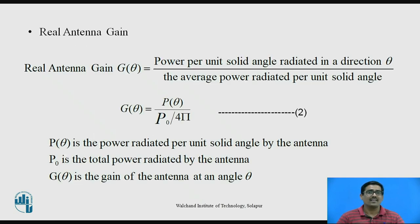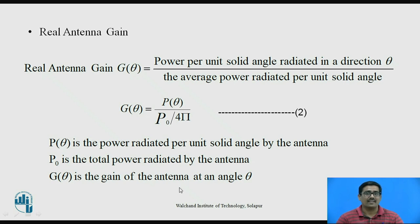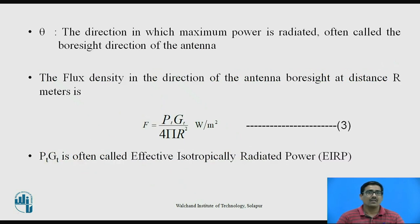The real antenna gain is defined as the ratio of power per unit solid angle radiated in a direction θ to the average power radiated per unit solid angle. This real antenna gain is defined mathematically as Gθ = Pθ / (P0 / 4π), where Pθ is the power radiated per unit solid angle by the antenna, P0 is the total power radiated by the antenna, and Gθ is the gain of the antenna at angle θ. θ is the direction in which maximum power is radiated, often called the boresight direction of the antenna, which is very important for the design of flux density.